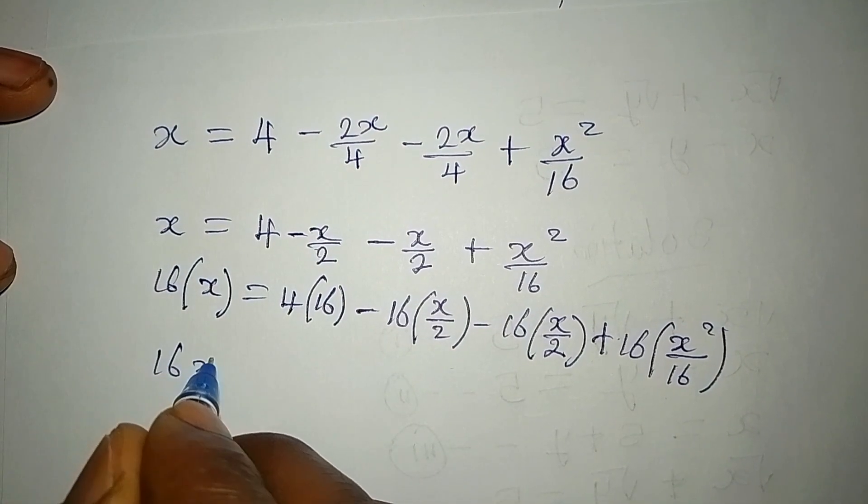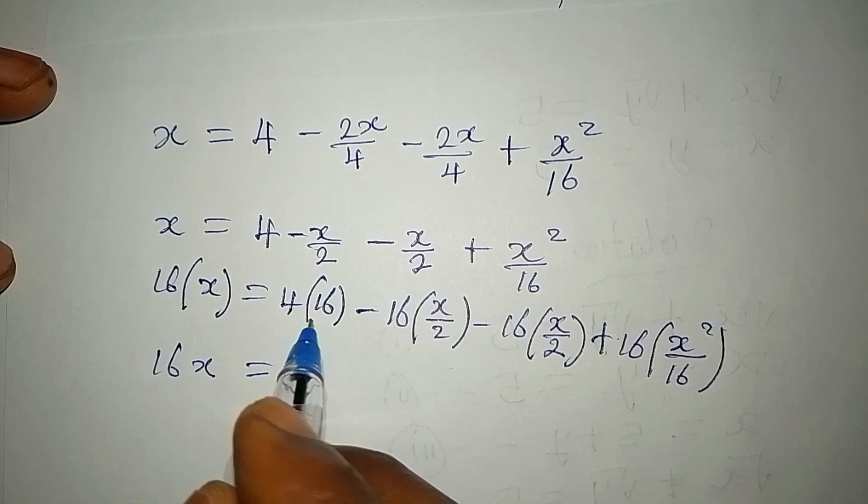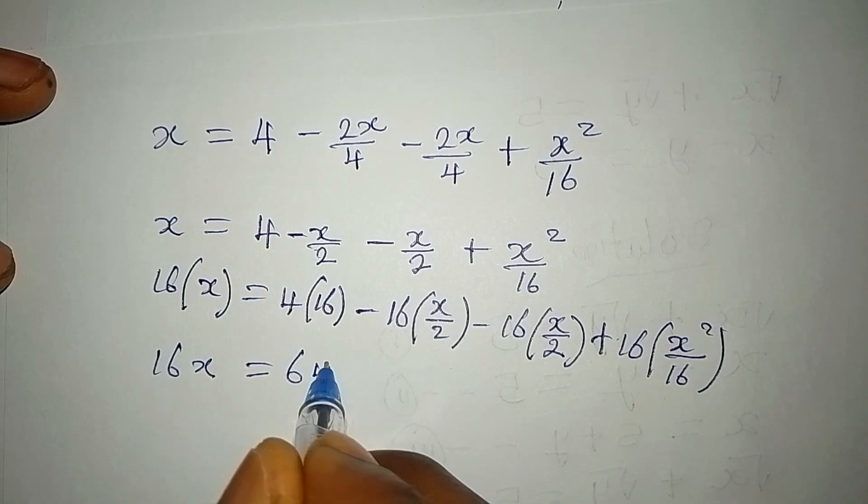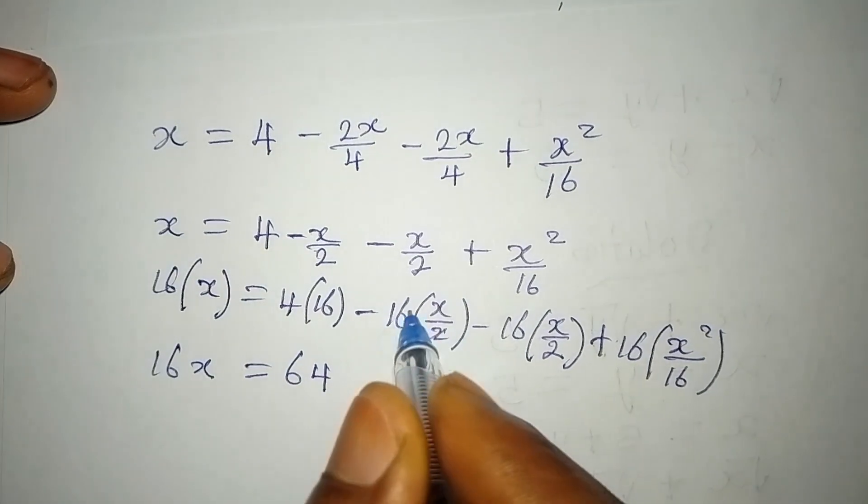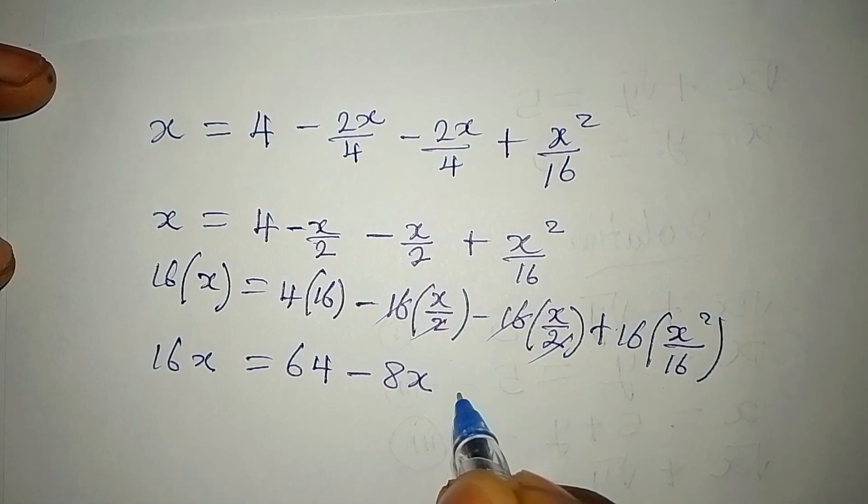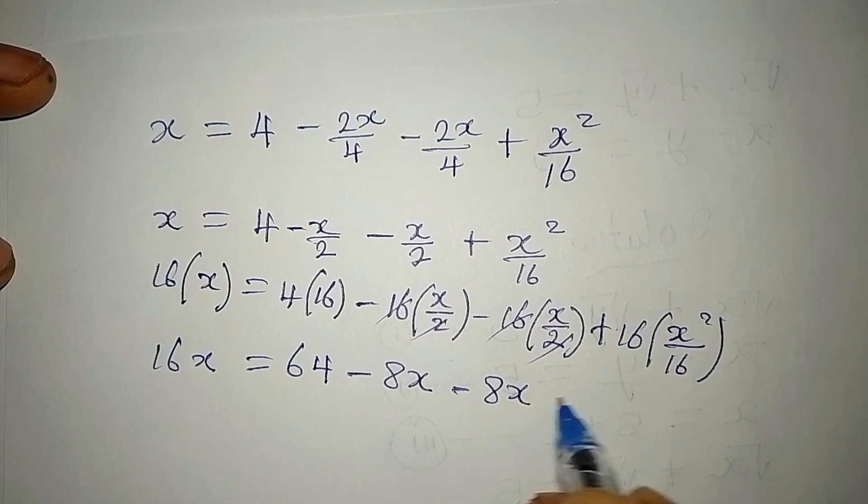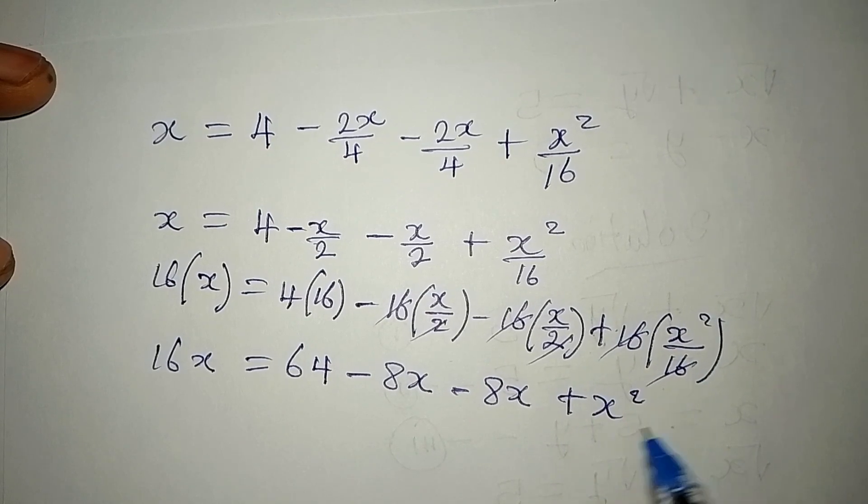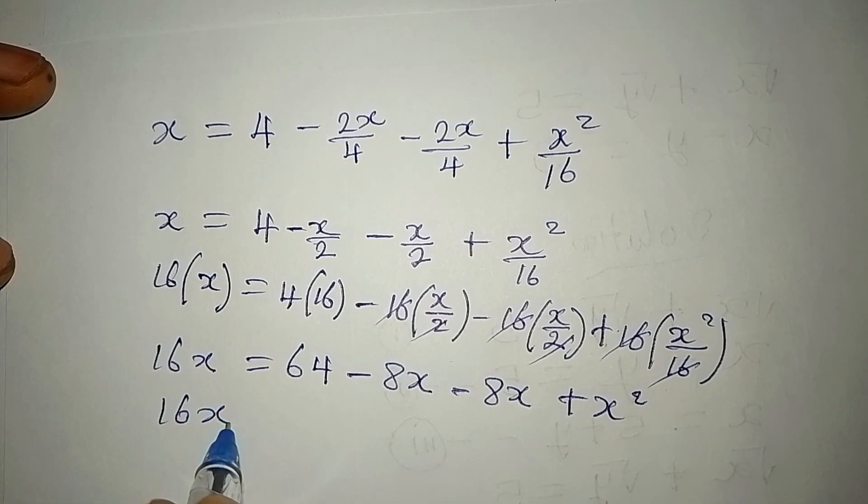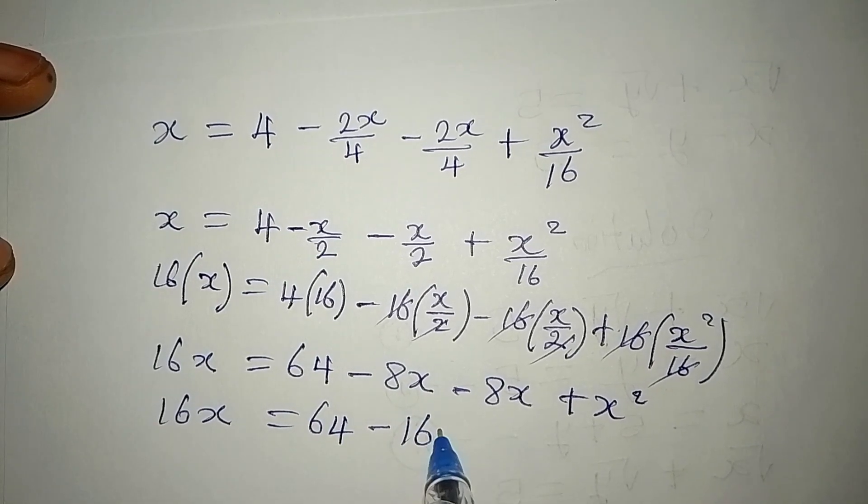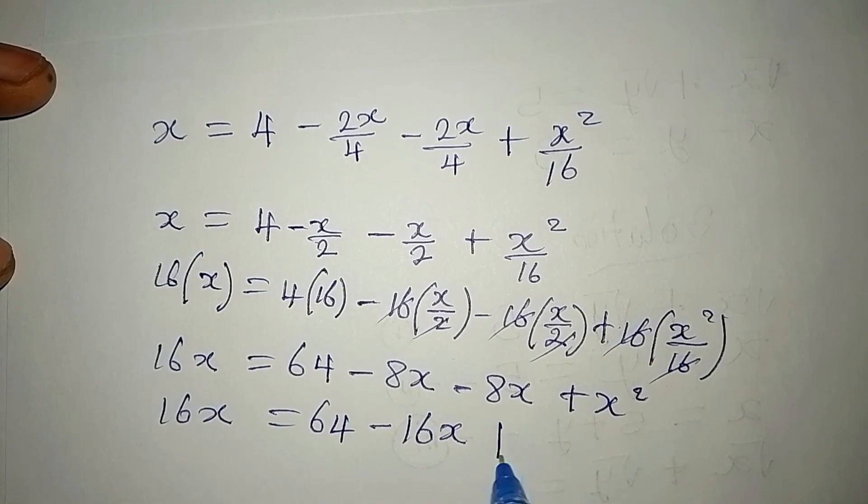So here we have 16x equal to 16 multiplied by 4 will give 64. Then 2 will go here, we have -8x. 2 will go again, we have -8x. 16 will go there, and we have +x². Now 16x is equal to 64 - 16x + x².